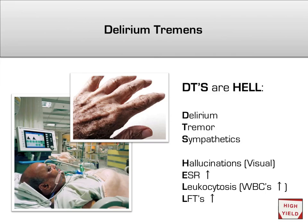You can remember this using the mnemonic 'DTs are HELL': D for delirium, or the significant confusion and agitation that accompanies DTs; T for tremor; S for sympathetic overactivation, resulting in fever, hypertension, tachycardia, and tachypnea; H for hallucinations, primarily visual; E for elevated ESR; L for leukocytosis; and the second L for LFTs. Use this mnemonic to rapidly recognize the clinical picture, as these patients need to be in the ICU for closer monitoring. You should be assessing for DTs on a daily basis while taking care of any patient detoxing from alcohol.